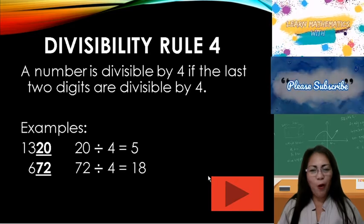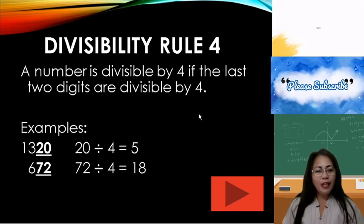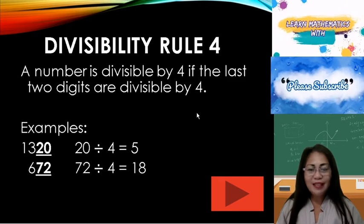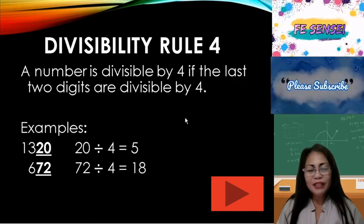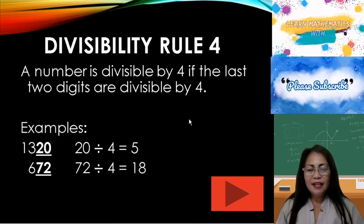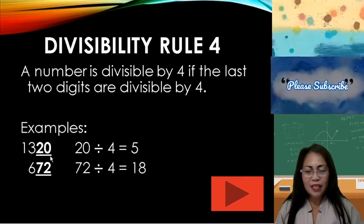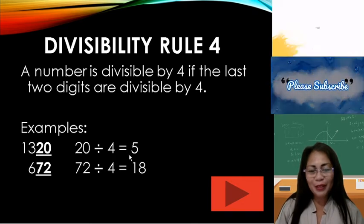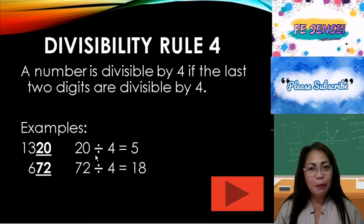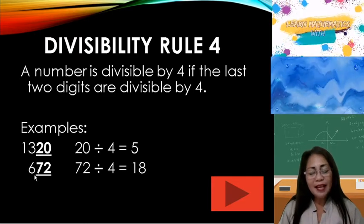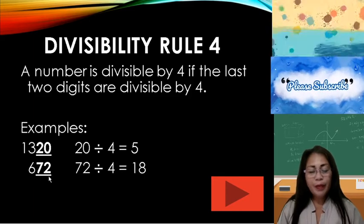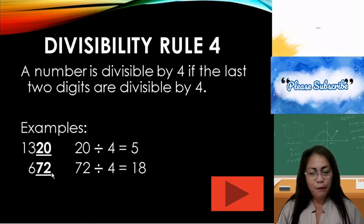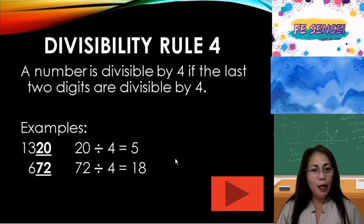Divisibility rule 4: A number is divisible by 4 if the last two digits are divisible by 4. Example: 1,320 — the last two digits are 20; 20 divided by 4 equals 5, there's no remainder, therefore 1,320 is divisible by 4. Another example: 672 — 72 divided by 4 equals 18, there's no remainder, therefore 672 is divisible by 4.